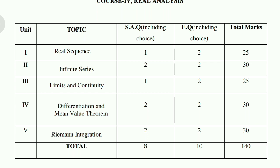If you just want to pass, preparing any 3 chapters is enough. The recommended 3 chapters are: Chapter 2 Infinite Series (30 marks), Chapter 4 Differentiation and Mean Value Theorem (30 marks), and Chapter 5 Riemann Integration (30 marks). These 3 chapters together carry 90 marks.